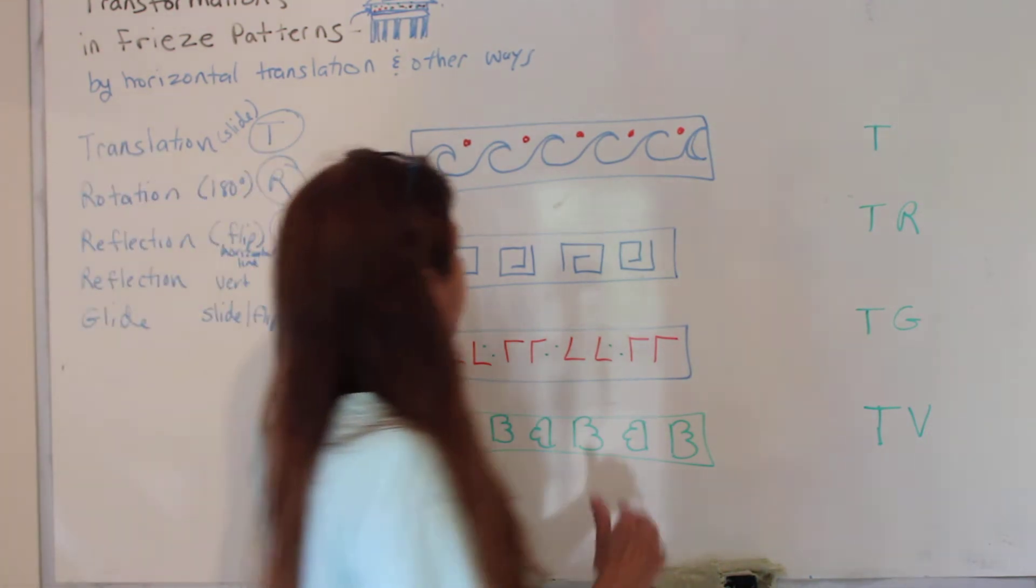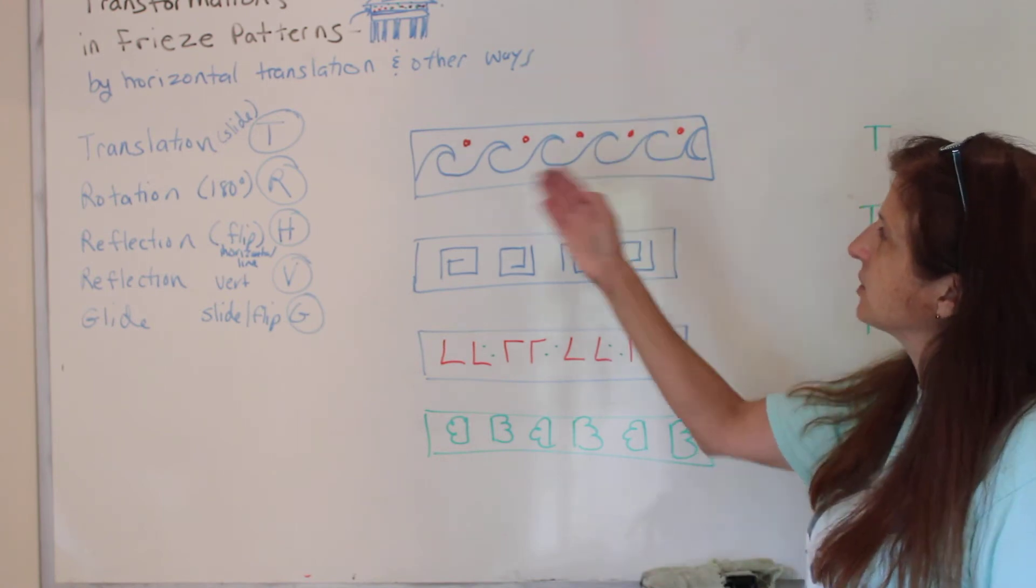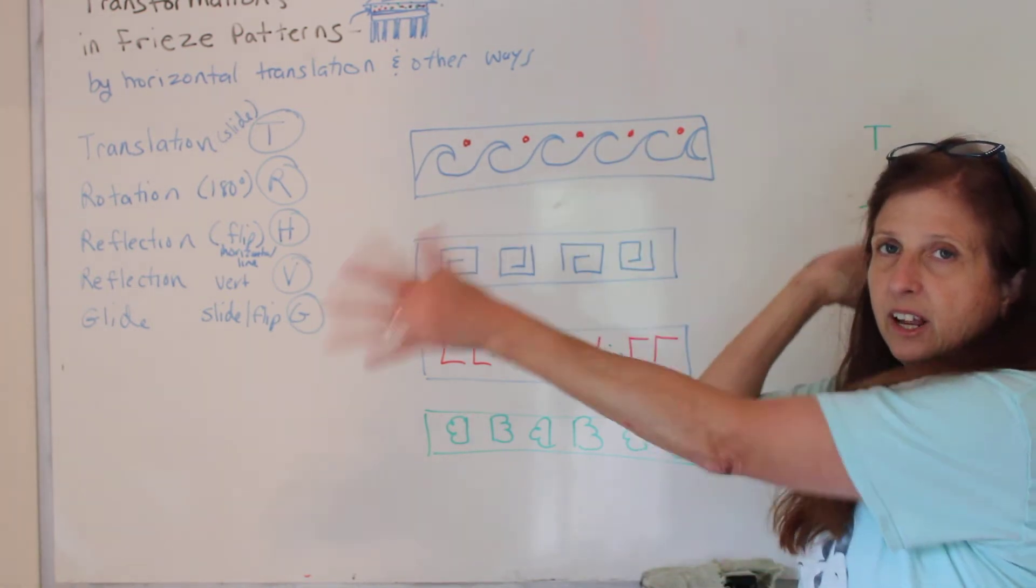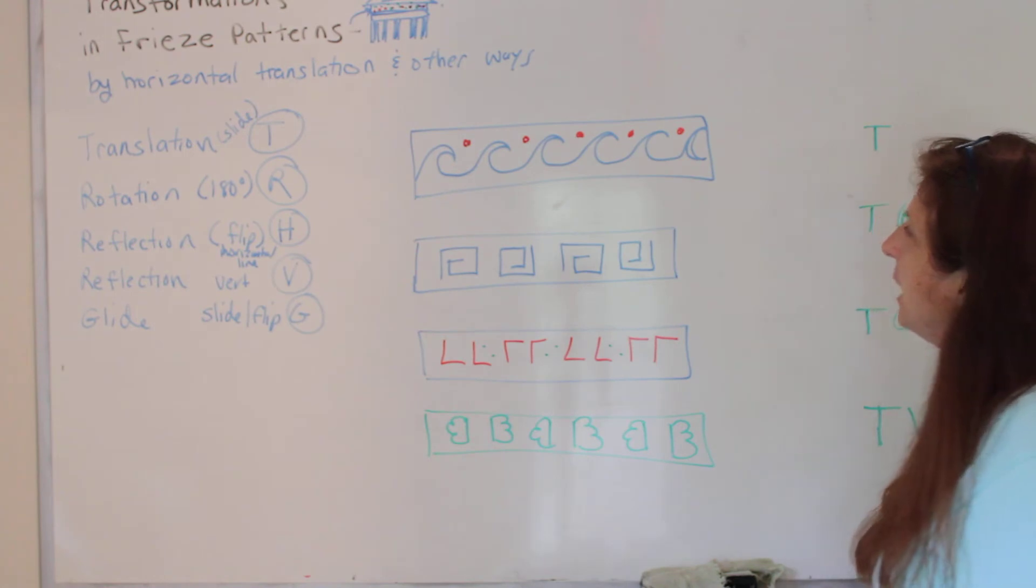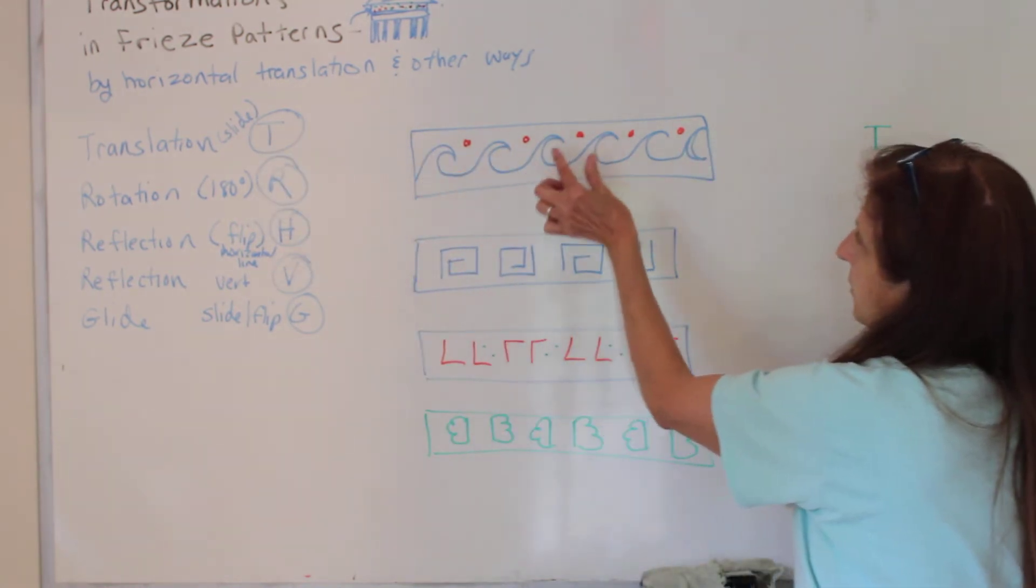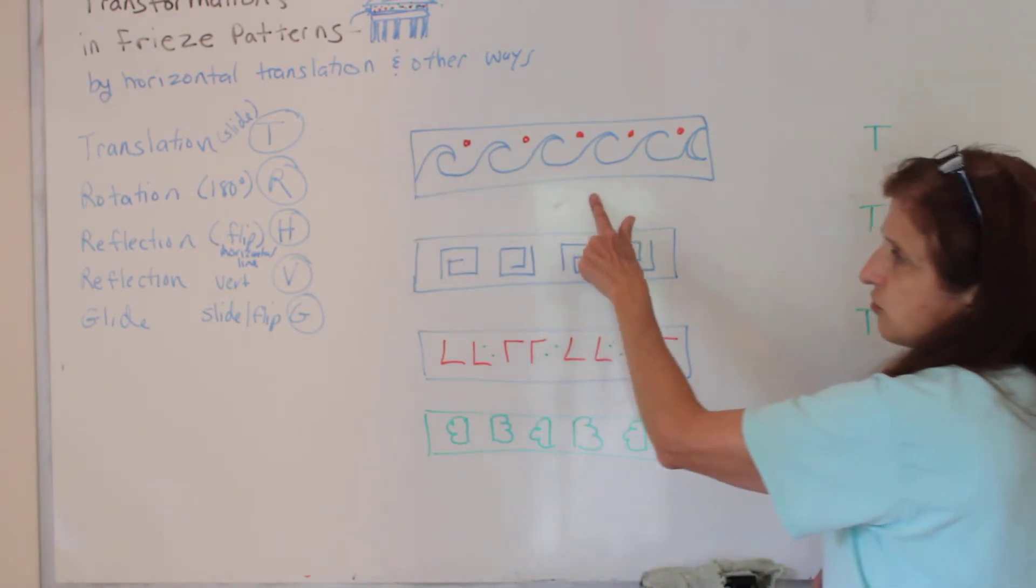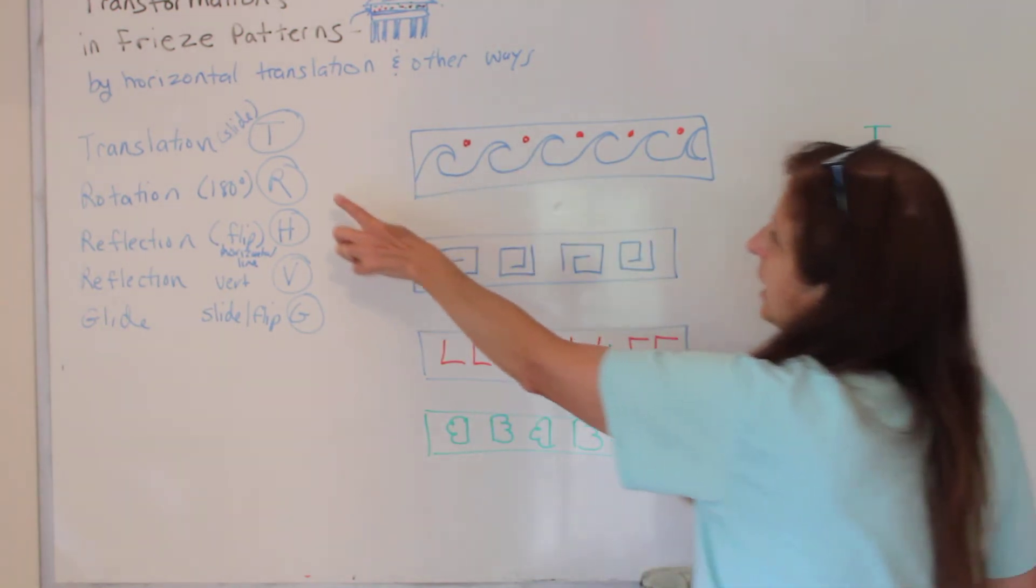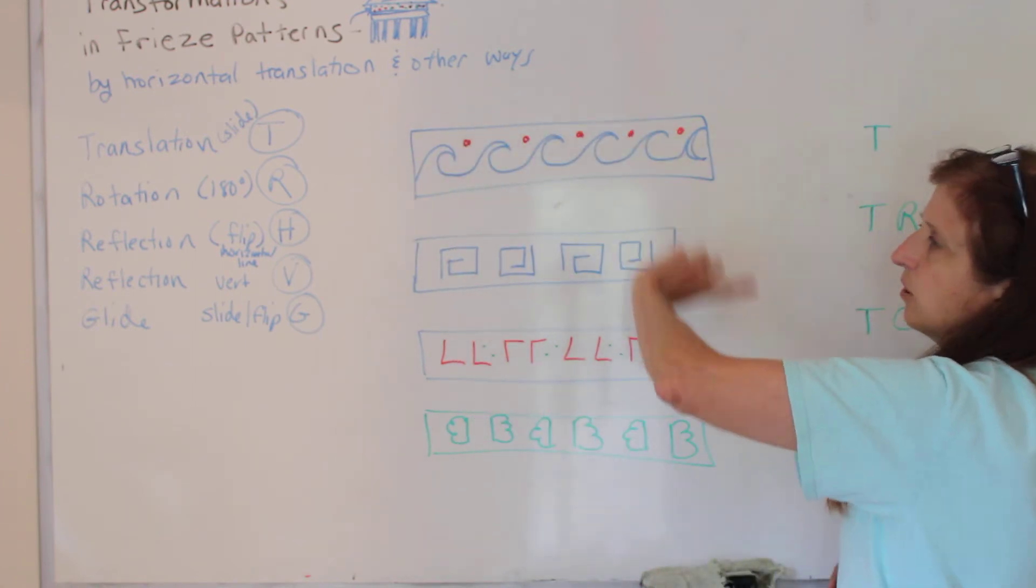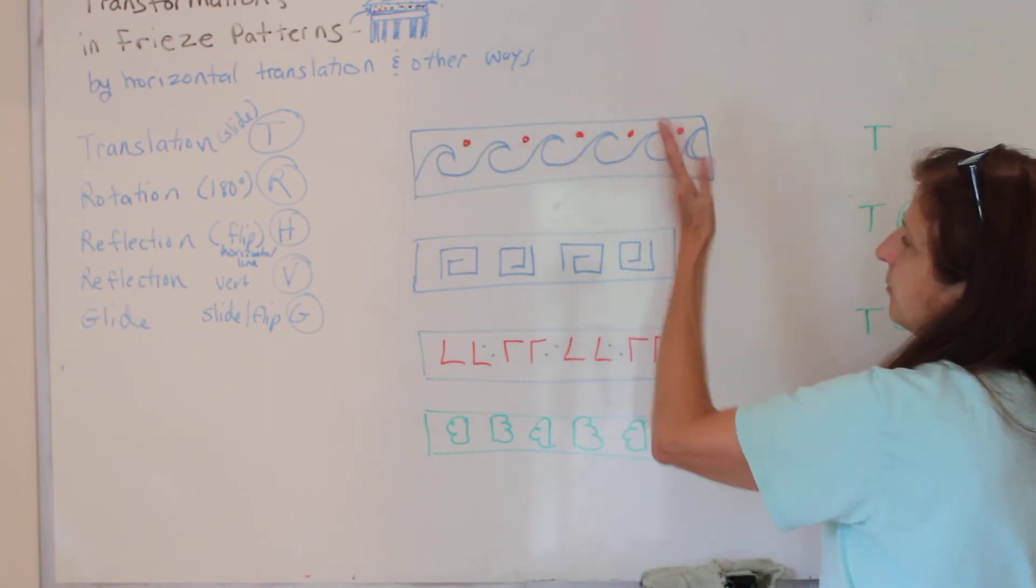So let's see if we can figure out what are some of the transformations going on in this lovely frieze pattern that I drew. So can you slide the pattern down onto itself? Yes. So this is a translation. Can you rotate it and it get on itself? Nope. Can you flip it and it get on itself? Nope.